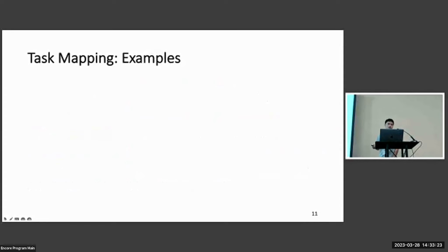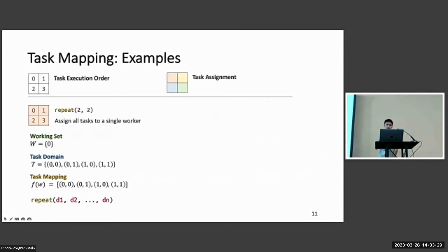I will give two examples of task mapping to help you understand this concept. Here, I will use the box to represent a task, and the number in the box to represent the execution order of the tasks that are assigned to the same worker. And the different coloring of the box represents the assignment of the tasks to different workers.